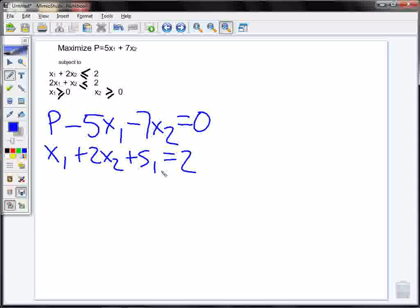So for my first equation, I have x1 plus 2x2 plus my first slack variable s1. Now this is going to equal 2. My second equation then becomes 2x1 plus x2 plus my second slack variable s2. Again, this is equal to 2. And this is because that's what my constraints were. They both were 2.